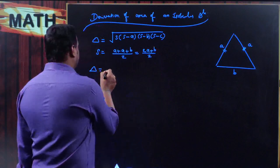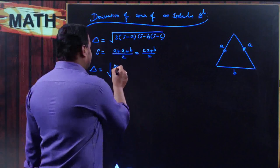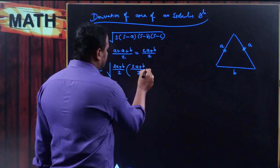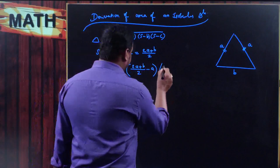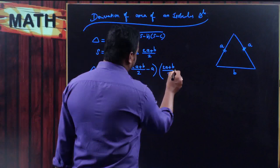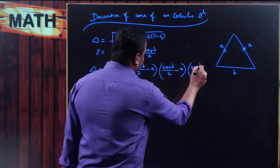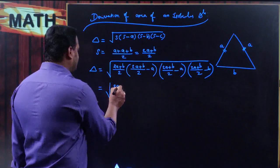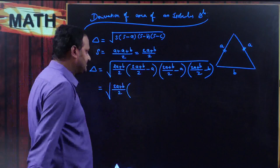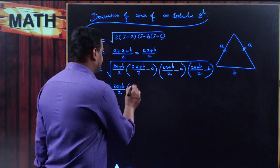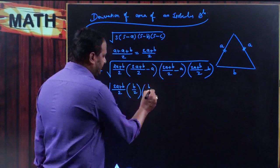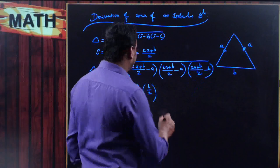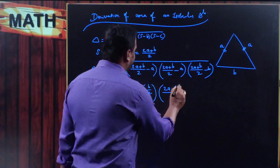In order to find the area, delta equals root over s, which is 2a plus b by 2, into s minus a, which is 2a plus b by 2 minus a, into s minus b, which is 2a plus b by 2 minus a, into s minus c, which is 2a plus b by 2 minus b. After simplifying: s minus a gives b divided by 2, s minus b also gives b divided by 2, and s minus c gives 2a plus b minus 2b, which is 2a minus b, whole divided by 2.